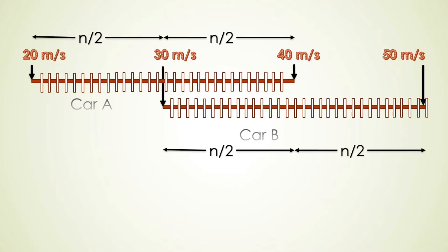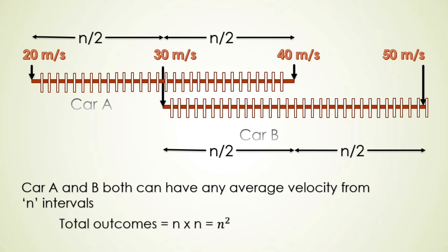We have supposed that one interval consists only a point of speed. Now since both the intervals are equal, 40 minus 20 is equal to 20 and 50 minus 30 is also equal to 20, so we can divide both in equal number of intervals. Car A and B both can have any average velocity from any interval. Now we have to calculate the total number of outcomes. It is similar to two dice thrown simultaneously. Since the outcomes of both are 6 and 6, we have calculated our total number of outcomes as n multiplied by n, and that is n squared.